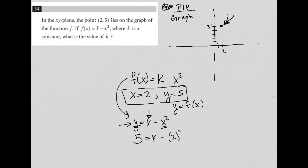Because I know when x equals 2, y has to equal 5. So I'd have 5 equals k minus 2 squared, which is 4. I can then add 4 to both sides, and I'm left with k equals 9.